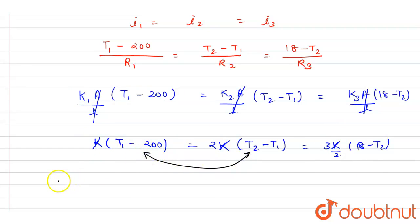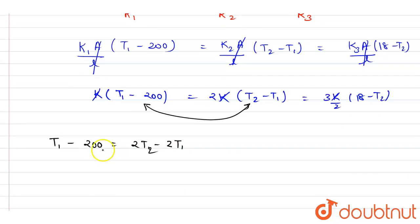Now you can just solve any two. If I solve these two, so it is T minus 200, it is equals to 2T2 minus 2T1. You can take the T term on one side, so it is 3T1 minus 2T2, it is equals to 200.